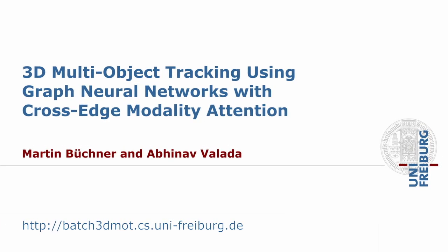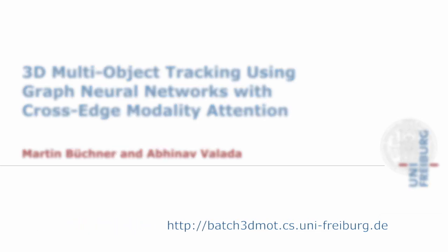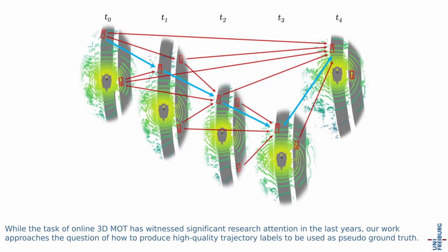We present 3D multi-object tracking using graph neural networks with cross-edge modality attention. While the task of online 3D multi-object tracking has witnessed significant research attention in recent years, our work approaches the question of how to produce high-quality trajectory labels to be used as pseudo-ground truth.